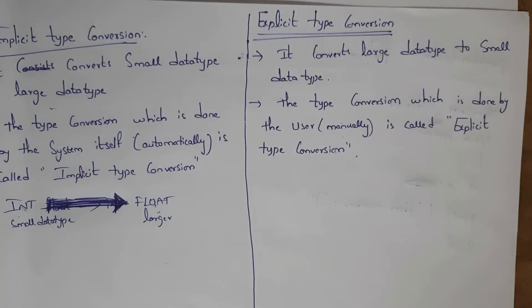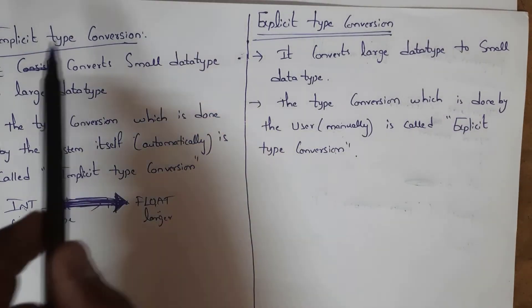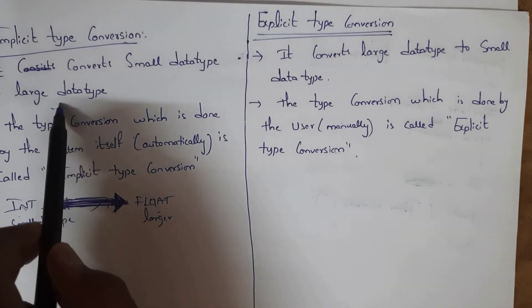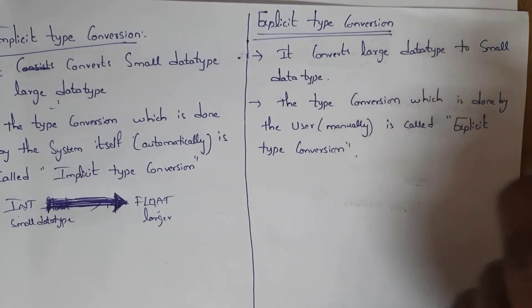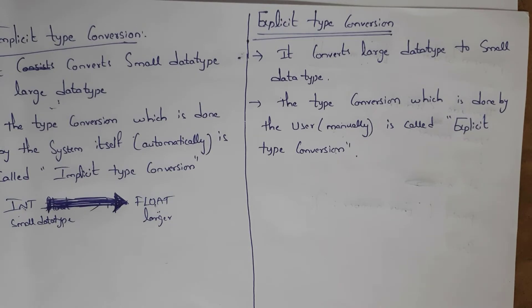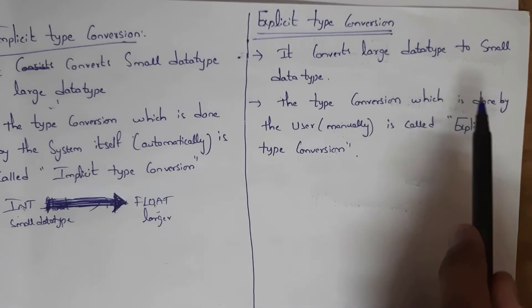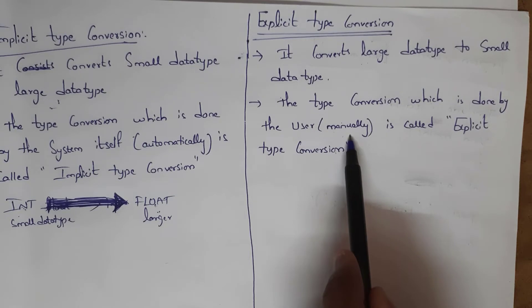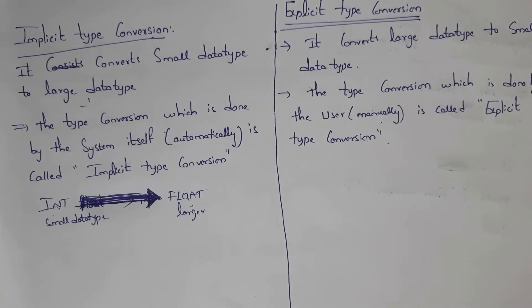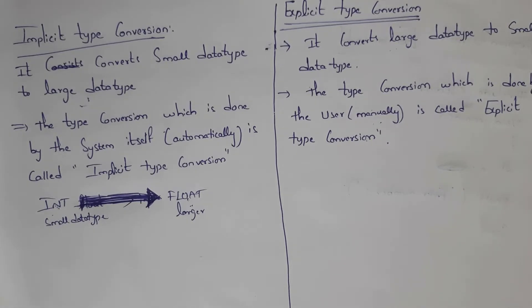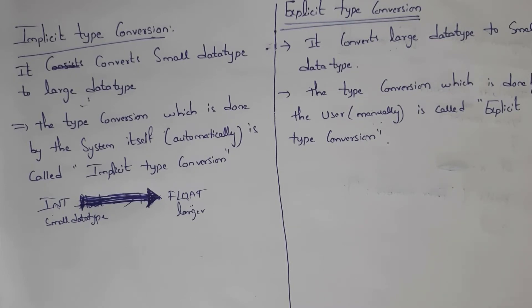Implicit type conversion converts a smaller data type to a larger data type, whereas explicit type conversion converts a larger data type to a smaller data type. The definition of explicit type conversion: type conversion which is done by the user manually is called explicit type conversion. In explicit type conversion, converting one data type to another is not done by the system automatically — the user should manually convert it.